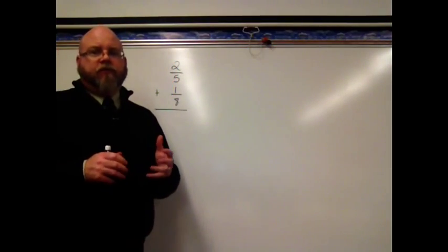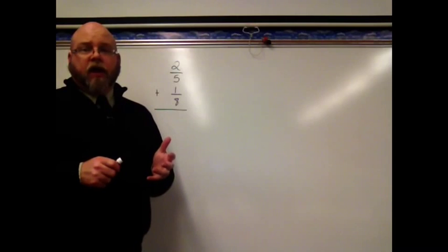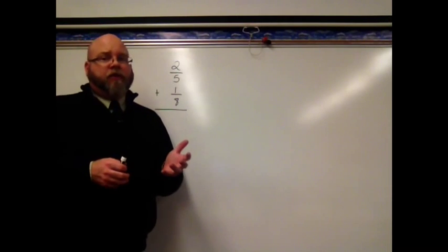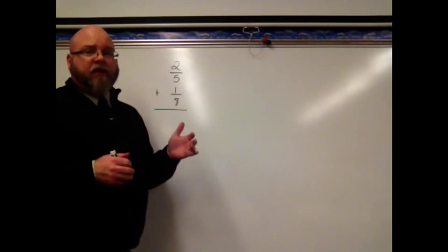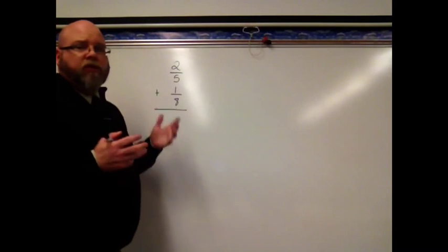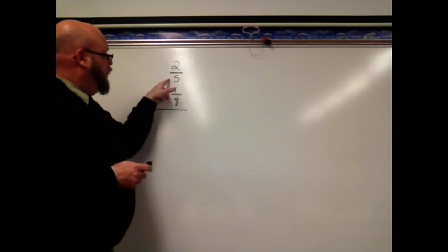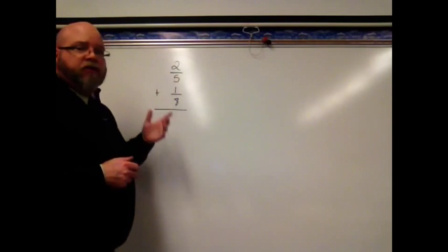So, we're still adding and subtracting fractions that have unlike denominators. Now, the last couple of times we've done this, when we've added and subtracted, we've noticed that we could get to the other denominator fairly simply. Here, I'm looking at 2 fifths plus 1 eighth.